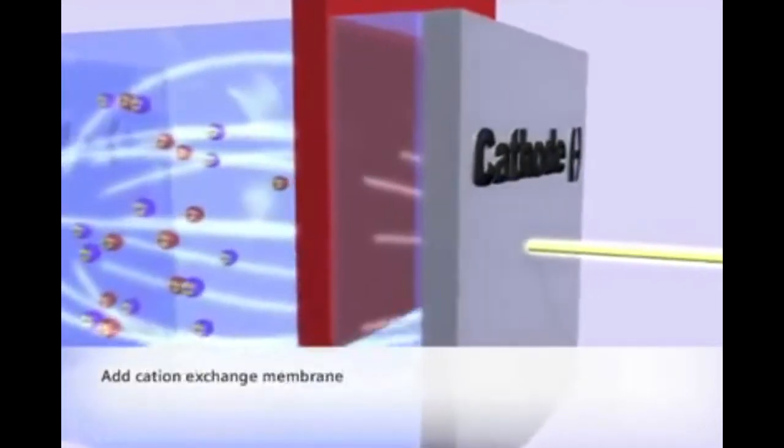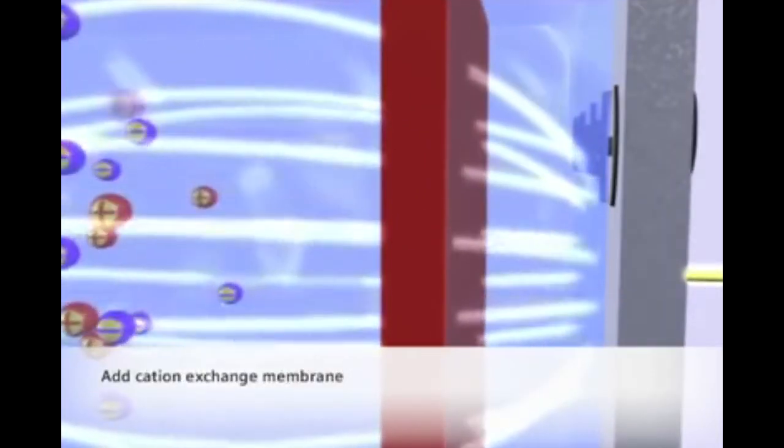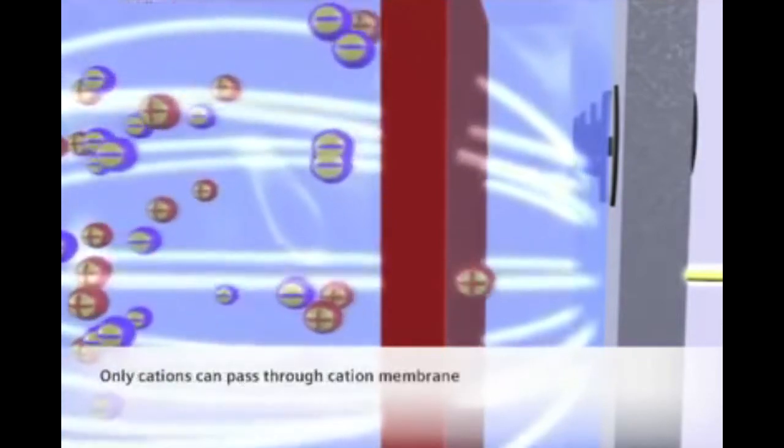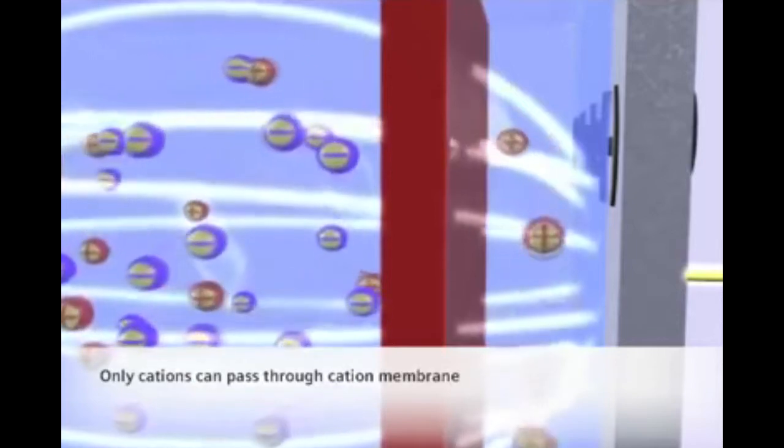When we insert an ion-exchange membrane made of cation-selective resins, it will block the flow of anions and water molecules. Only cations will be able to pass through to the other side.